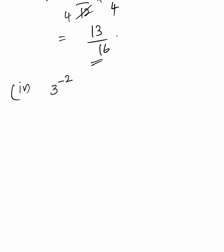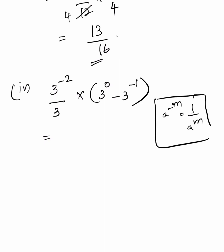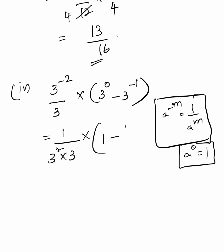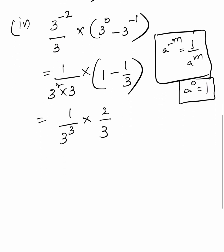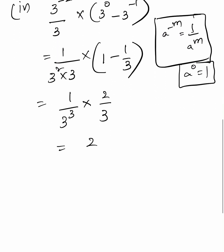Fourth part: 3 power minus 2 by 3, into 3 power 0, minus 3 power minus 1. Using a power minus m equals 1 by a power m: 1 by 3 square into 3, into 3 power 0 is 1, minus 1 by 3. It is equal to 1 by 3 cube into 2 by 3, that is equal to 2 by 3 power 4, that is equal to 2 by 81.